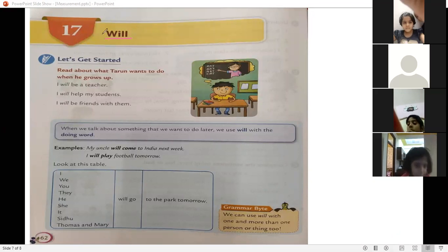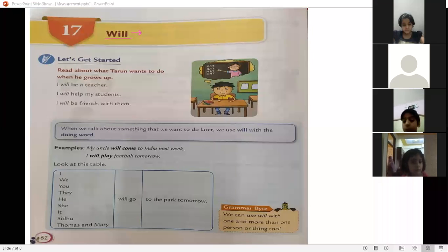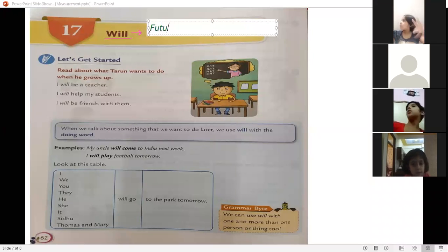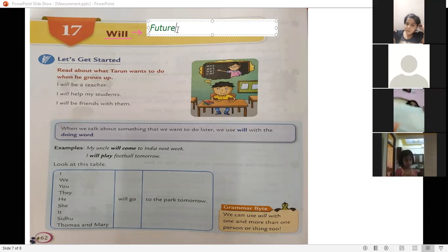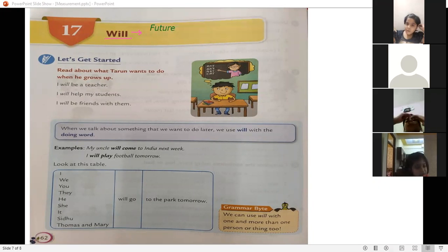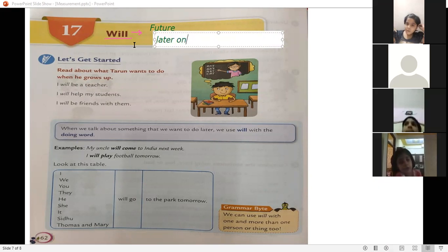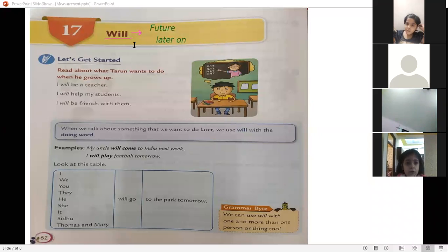What do we pronounce? Will. We use Will when we talk about future. When we talk about future, we will use Will. Future means anything joh bhi baad mein hoogah, to demonstrate later on. Later on means joh chiz ham baad mein karenge. That's why we use Will.